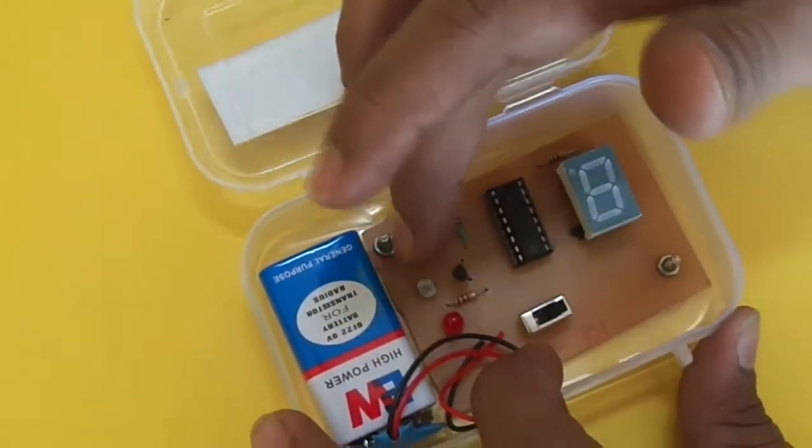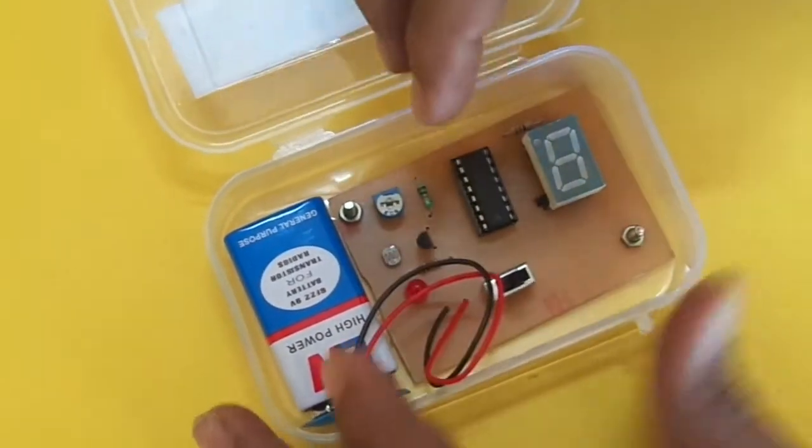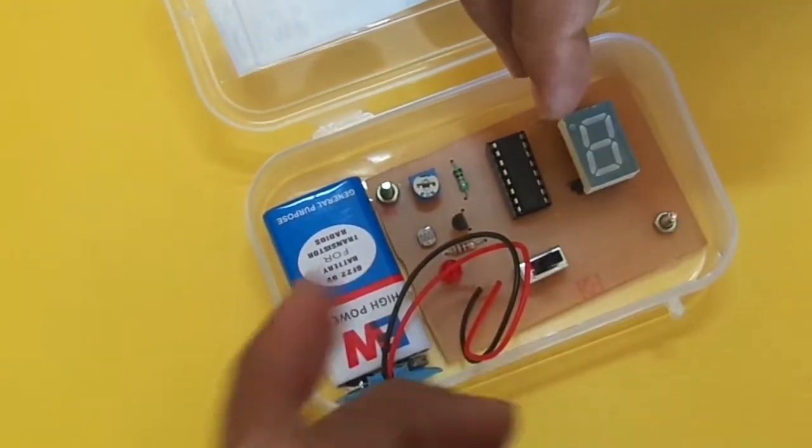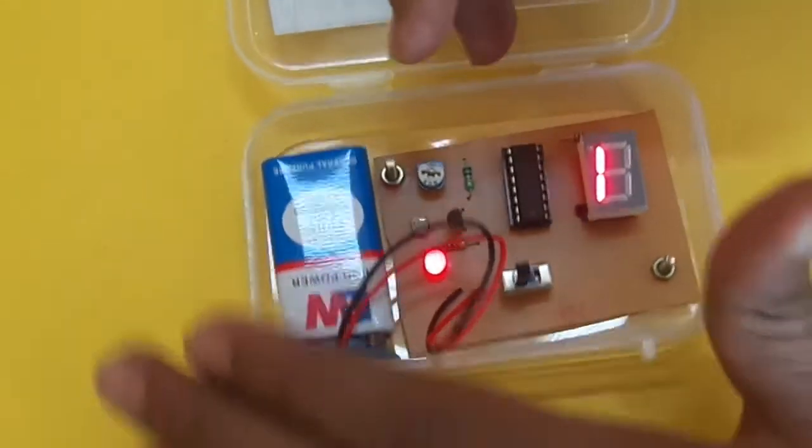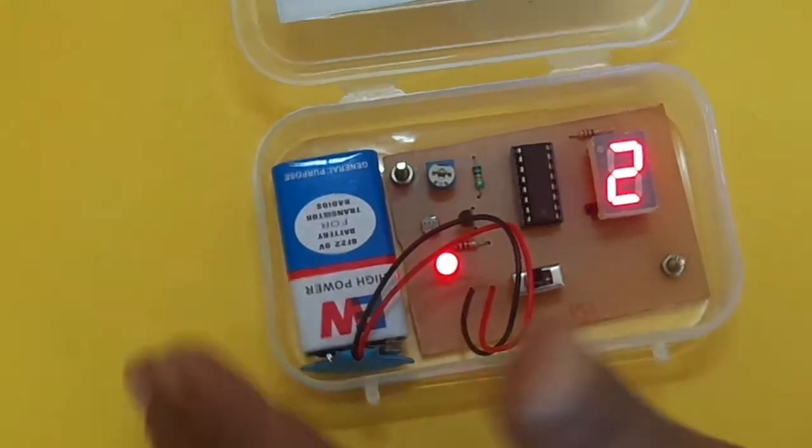The only thing is you have to give the output from a 555 timer, that's it. We have an LDR over here. We can keep a laser on that or we can directly go for normal light on it. It is initially one, so I have given the signal, it is two.